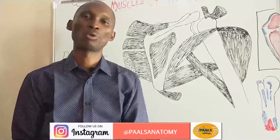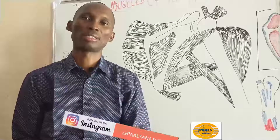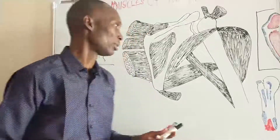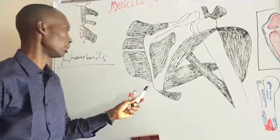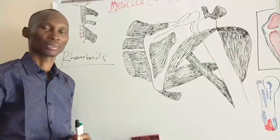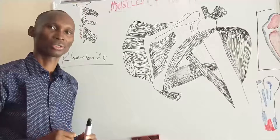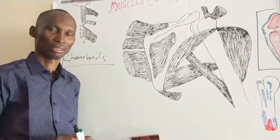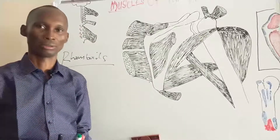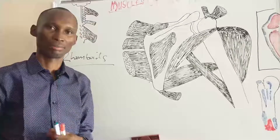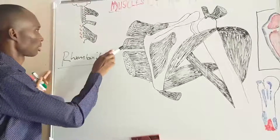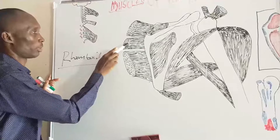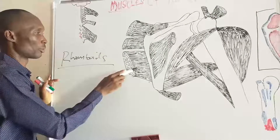The next muscles we will look at are the rhomboids. The rhomboids are muscles seen at the medial aspect of the scapula — rectangular muscles running from the neck to the scapula. There are two: the major and the minor, with the minor above the major. This is the cut edge of rhomboids minor, and this is the cut edge of rhomboids major.